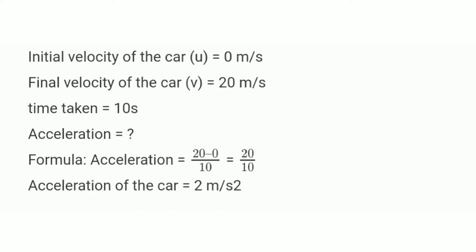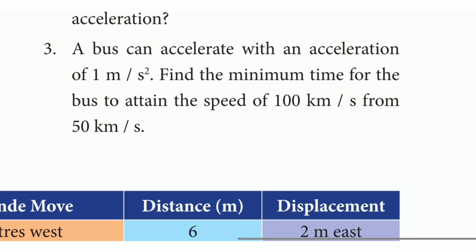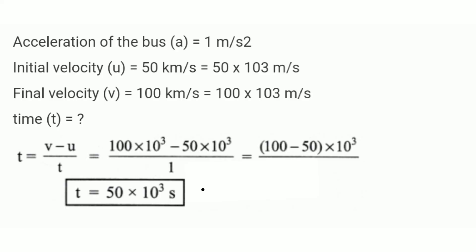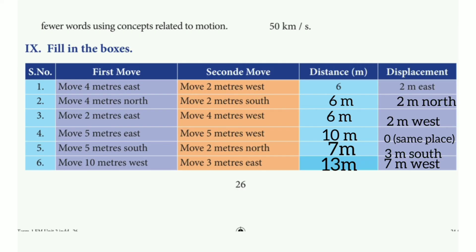Third numerical: A bus can accelerate with an acceleration of 1 meter per second square. Find the minimum time for the bus to attain a speed of 100 km/h from 50 km/h. Acceleration = 1 m/s², initial velocity = 50 km/h = 50 × 10³ m/s, final velocity = 100 km/h = 100 × 10³ m/s. Using t = (v − u) / a, t = 50 × 10³ seconds.